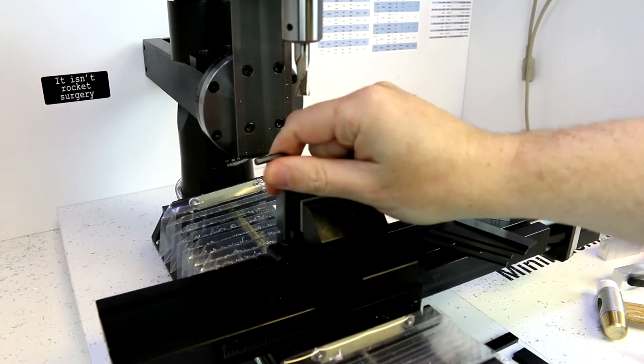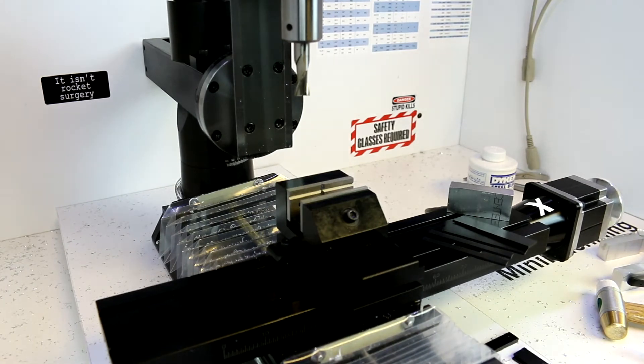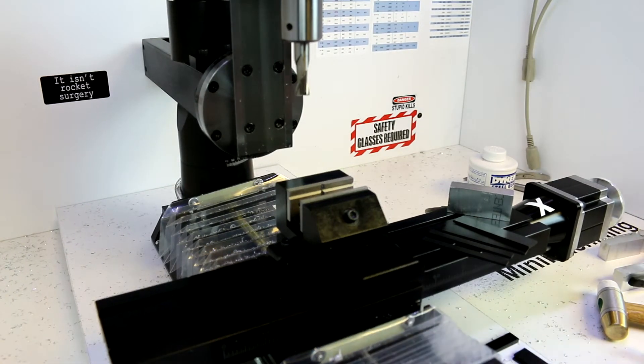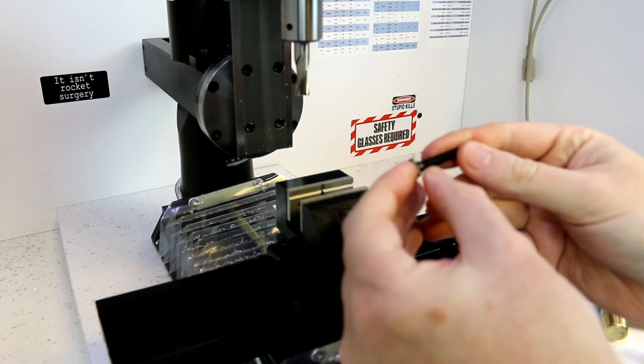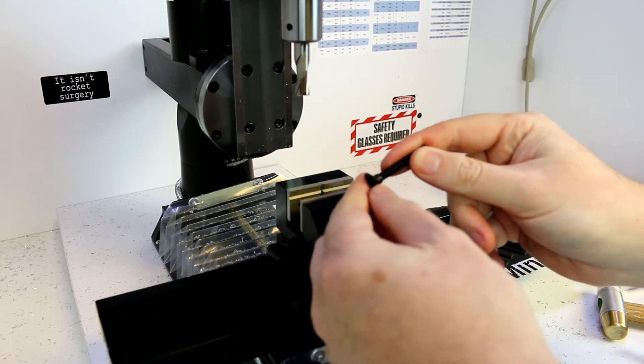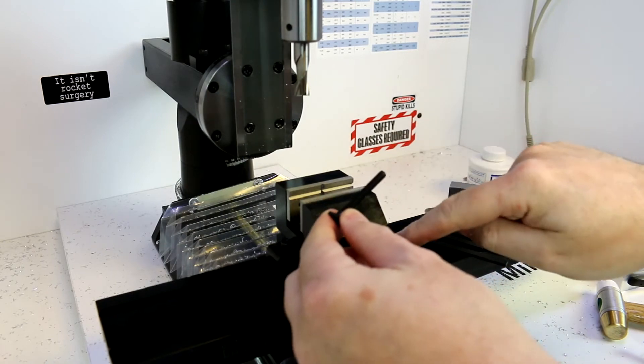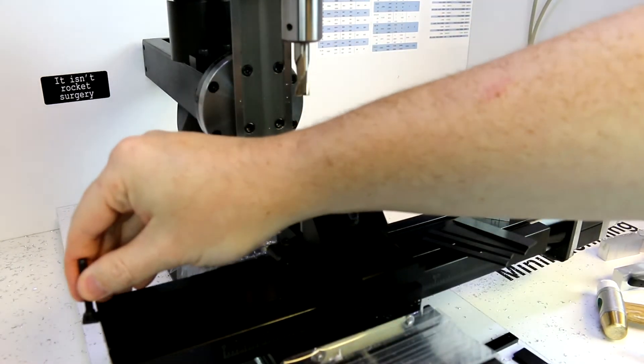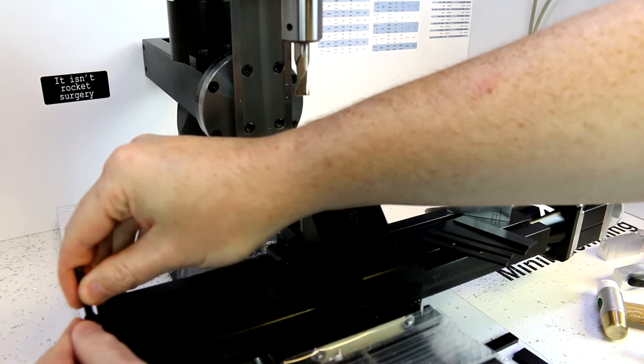Then we take our second clamp, move it into position, and tighten it down. Now a note on T-nuts: T-nuts come in different sizes and types. We're going to end up making some of these in a later video as well. You can either use a cap head screw or a piece of threaded rod.